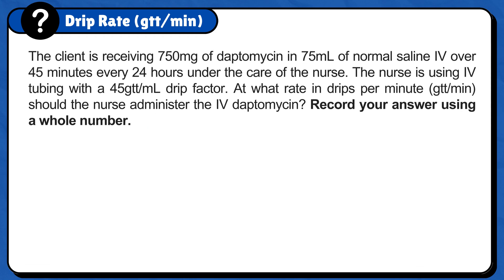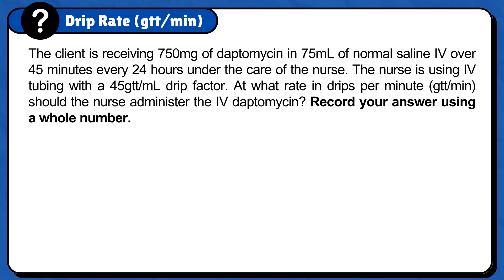The client is receiving 750 milligrams of daptomycin in 75 milliliters of normal saline IV over 45 minutes every 24 hours under the care of the nurse. The nurse is using IV tubing with a 45 gtt per milliliter drip factor. At what rate in drips per minute should the nurse administer the IV daptomycin? Record your answer using a whole number.